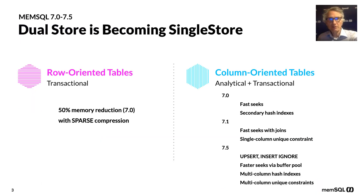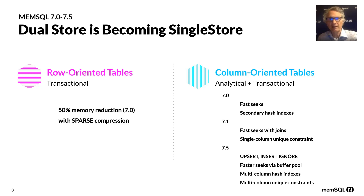Over MemSQL 7.0 and 7.1, we've delivered several features that are part of our single store initiative, and we're continuing that with MemSQL 7.5, which is a planned future release. When I talk about 7.0 and 7.1, these are things already delivered — you can try them today. For 7.5, these are speculative, so exactly when they'll all come is not 100% confirmed, but let's say they'll be in MemSQL 7.5.